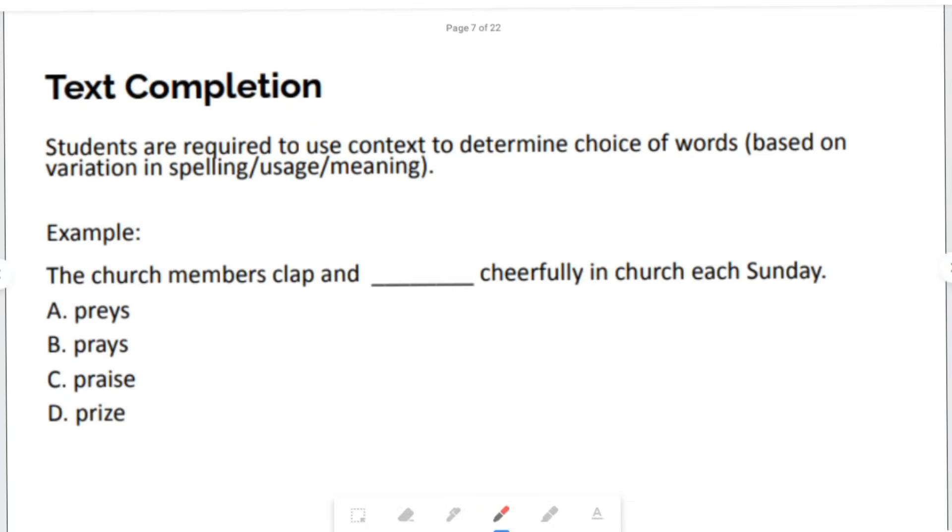Moving on to text completion. This may vary. Students are required to use context clues to determine choice of words based on a variation in spelling, usage, or meaning. For example, the church members clap and cheerfully in the church each Sunday. Which of the praise matches this sentence? Is it the praise as in P-R-E-Y-S? No, it's not. Is it the praise as in P-R-A-Y-S? No. It's praise. It's definitely not prize. Yes, so it's praise.